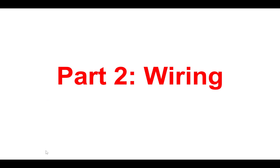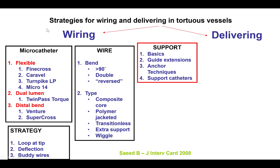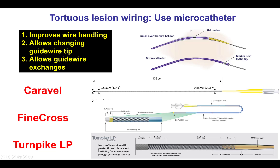The second part, after obtaining good support, is to wire the lesion. For these complex lesions, it is best to wire using a microcatheter and occasionally use specialized polymer-jacketed guide wires. The reasons for using a microcatheter are: first, it improves wire handling, making manipulation much easier; second, it allows removal and tip reshaping of the wire without losing position; and third, it allows exchange to a different wire type if the initial wire fails to cross the lesion.